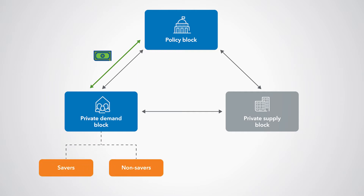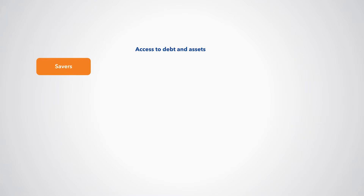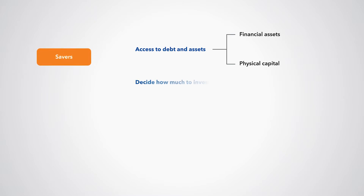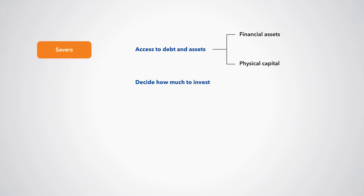There are two types of consumers: savers and non-savers. Savers have access to debt and assets, such as financial assets and physical capital. Therefore, they also decide how much to invest, which allows them to smooth consumption over time.